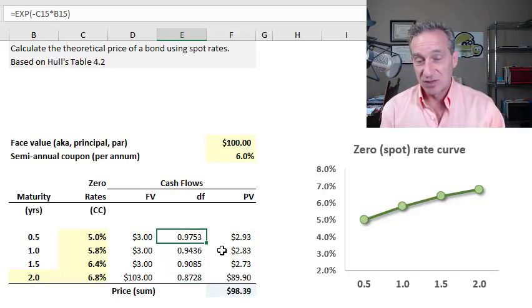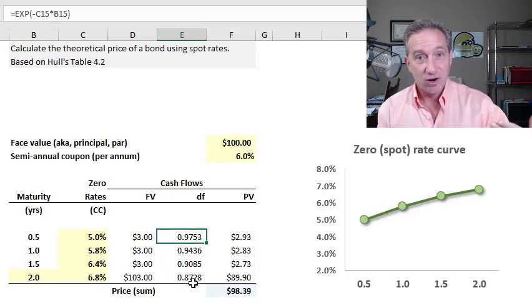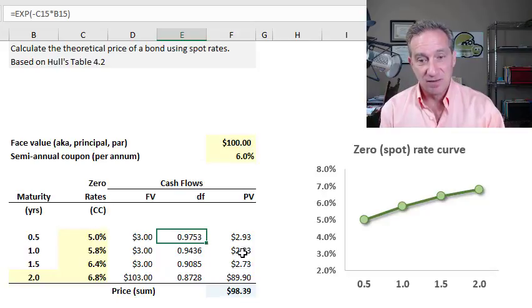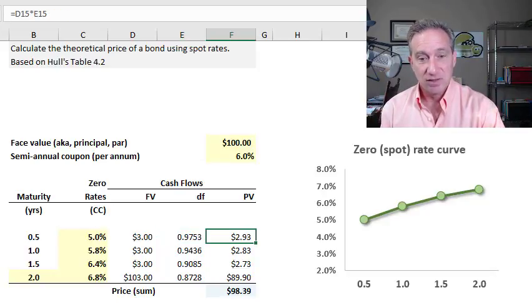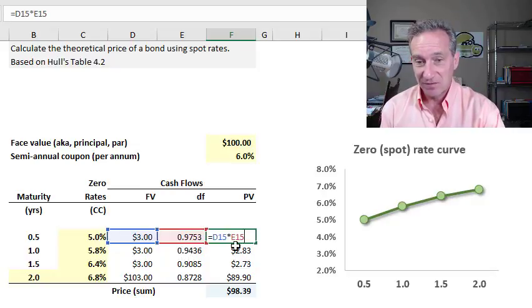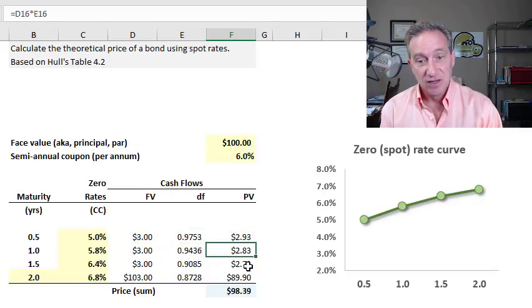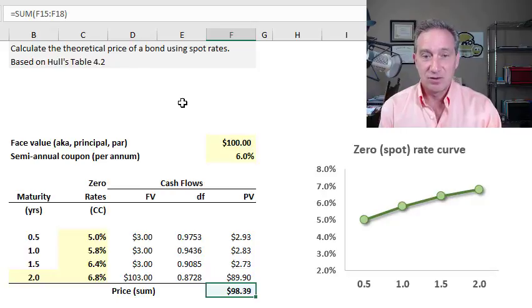Now given the discount factors, which themselves never lie and also already impound the compound information, we're able to simply multiply the future value by the discount factor and we get the present value of the cash flow. So that we now have a series, a stream if you will, of present valued cash flows.